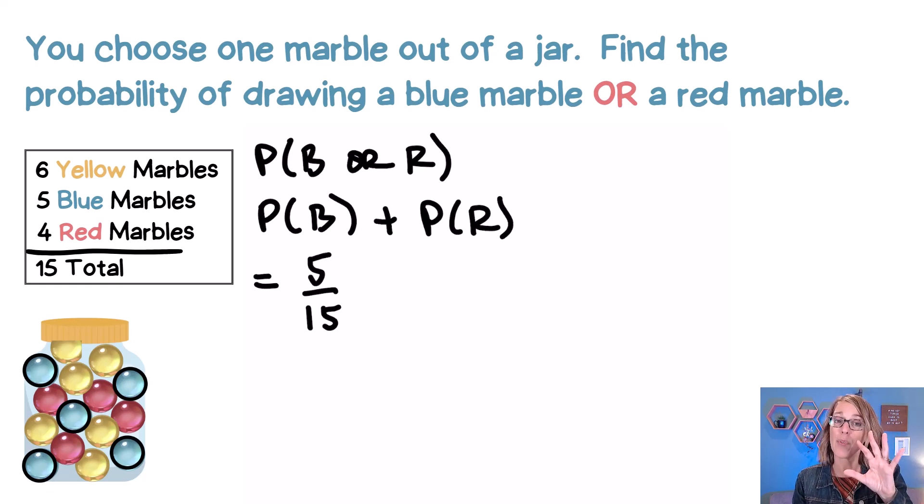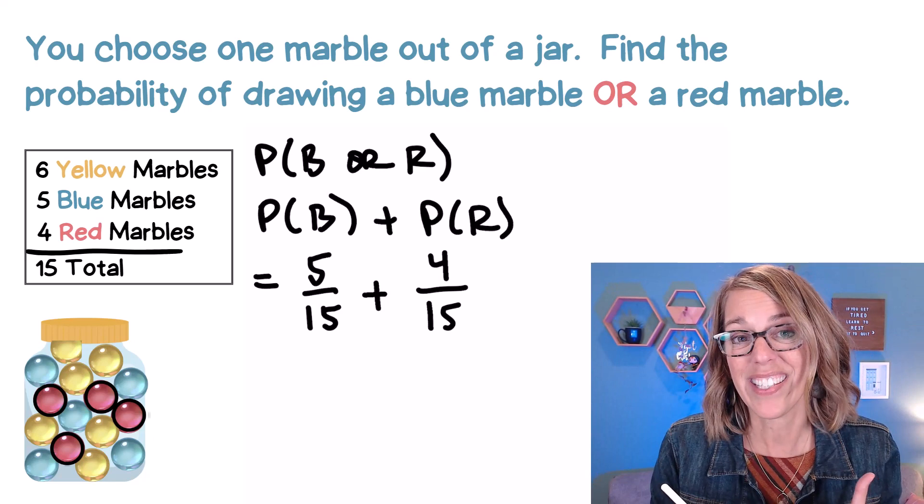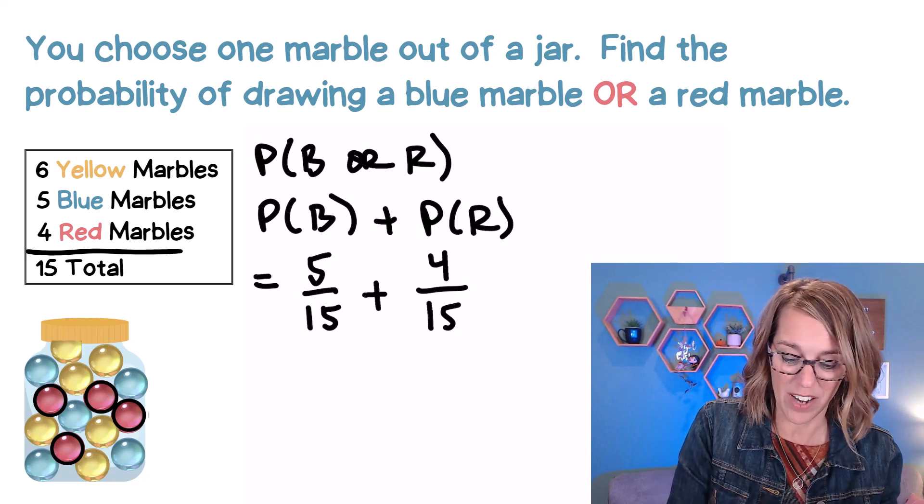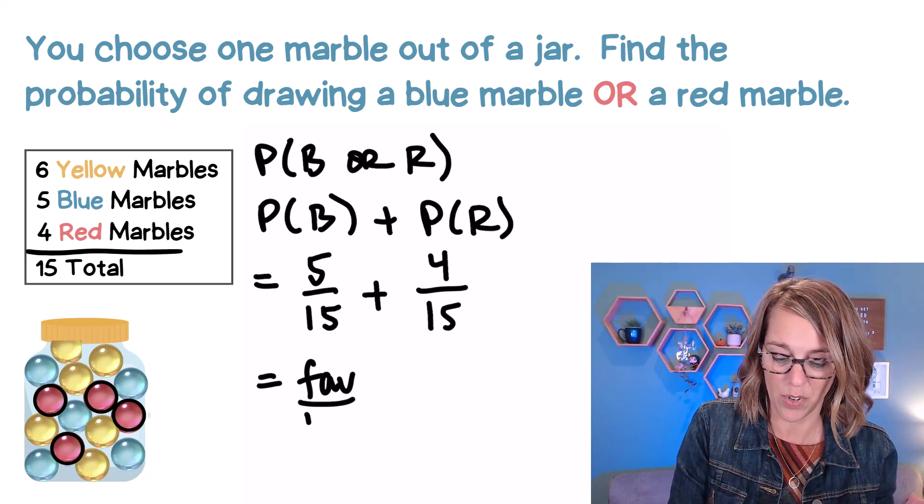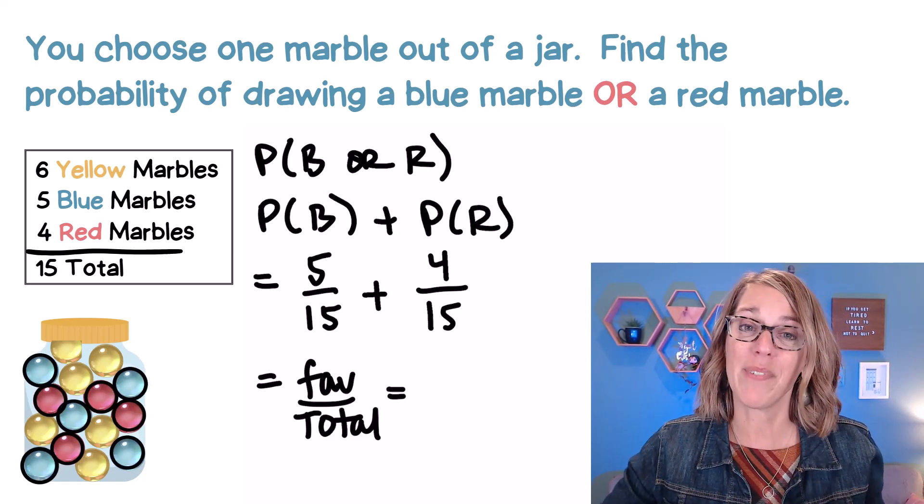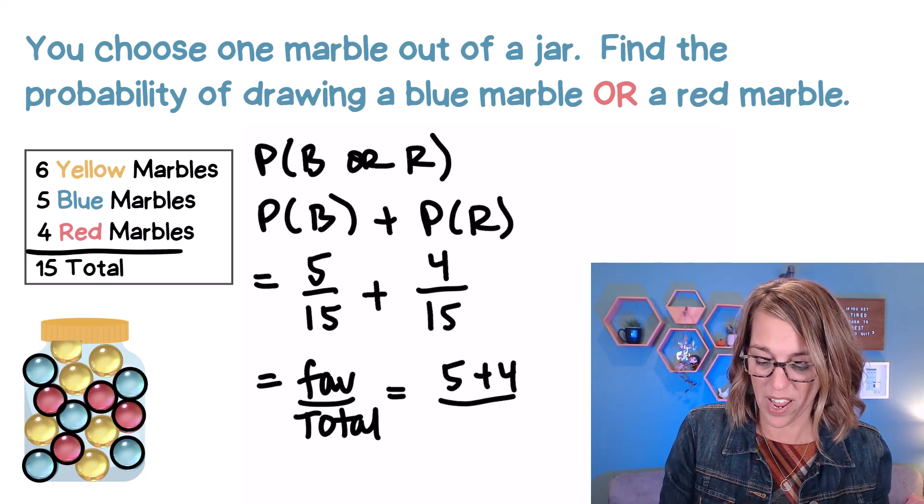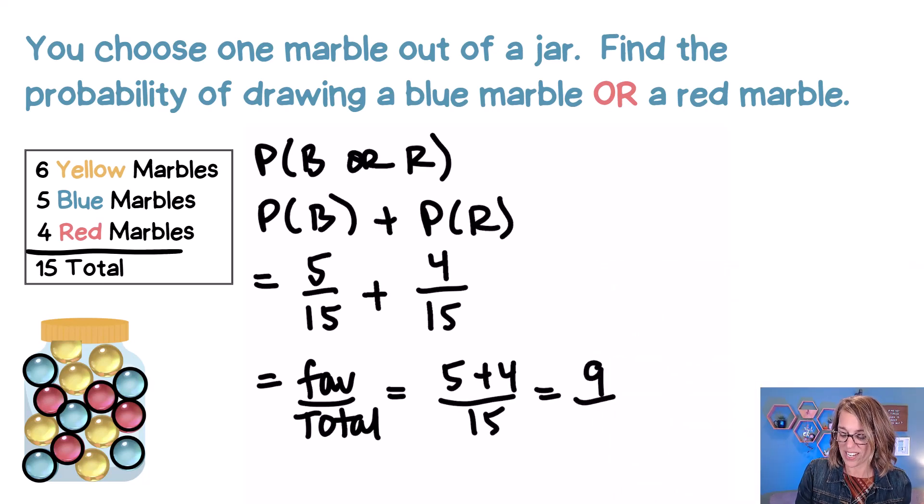Okay, so that's one way, or I would have been happy with a red marble as well. So OR, so we're going to add that together. This is also out of 15 marbles, there are four red marbles. Now the way that I actually like to think of this is as a single fraction with favorable outcomes over total outcomes. How many of these marbles would I be happy with? I would be happy with any of the five blue or the four red out of the 15. So we get nine out of 15 which reduces to three fifths.